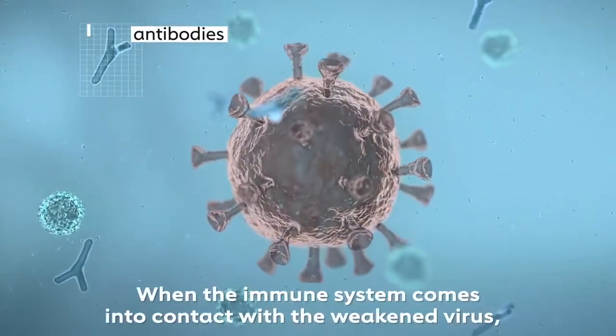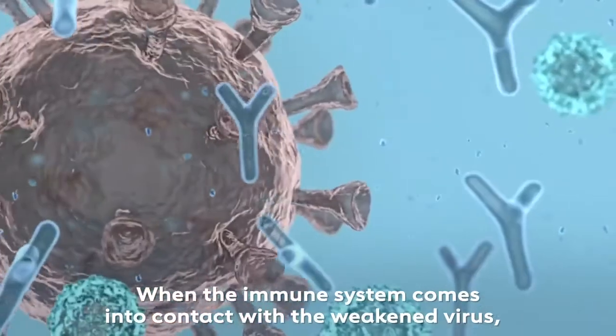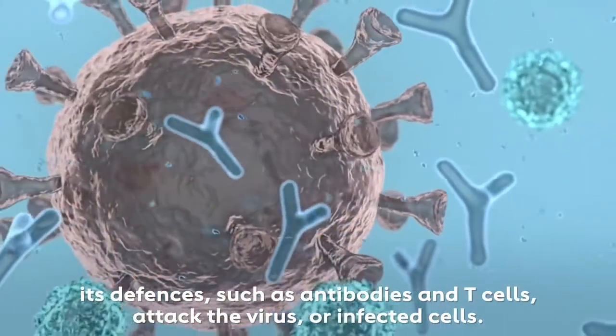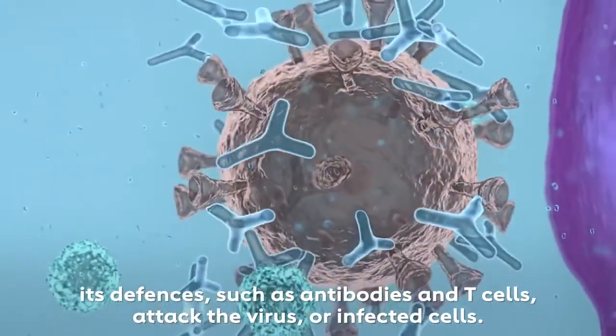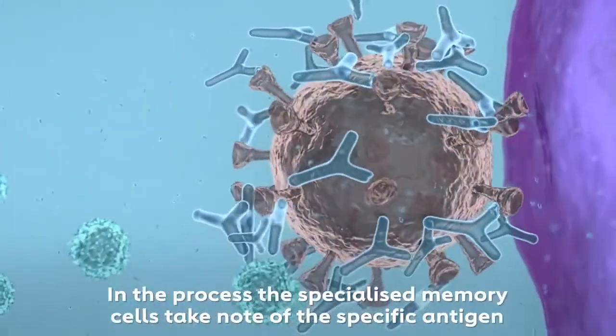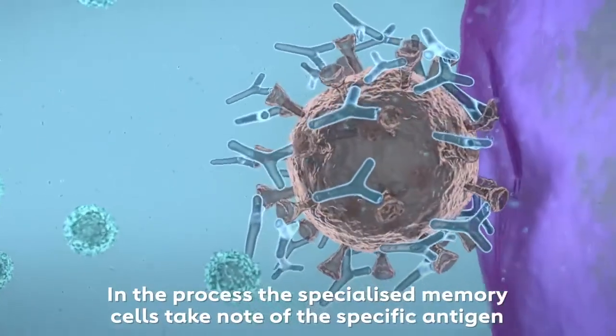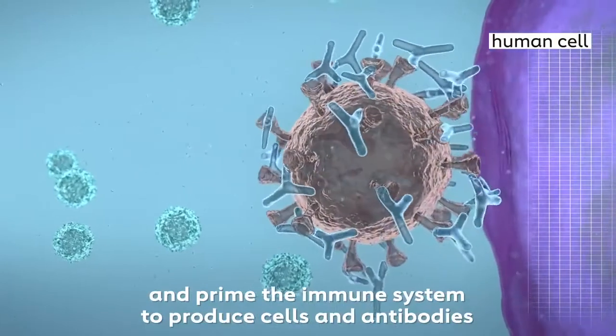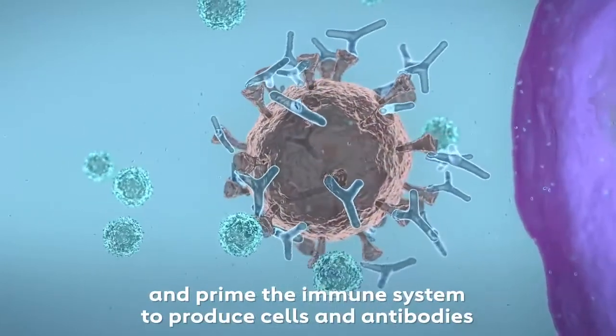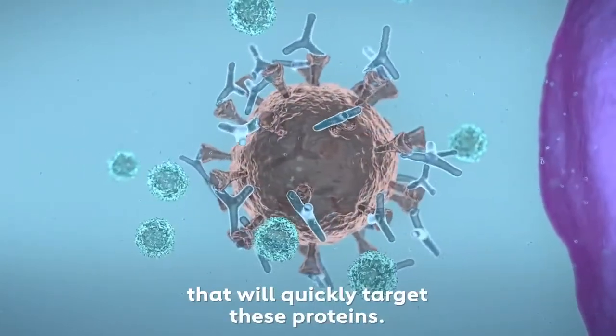When the immune system comes into contact with the weakened virus, its defenses, such as antibodies and T cells, attack the virus or infected cells. In the process, specialized memory cells take note of the specific antigen and prime the immune system to produce cells and antibodies that will quickly target these proteins.